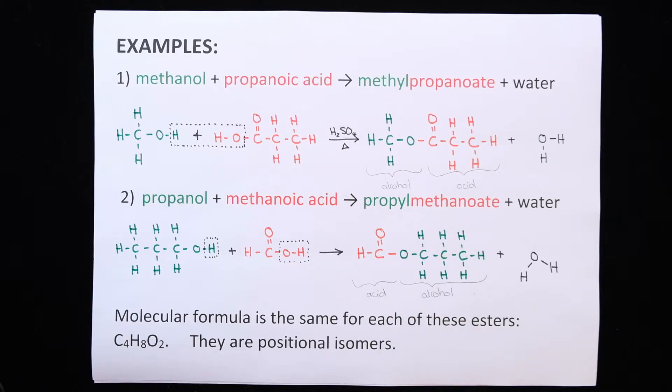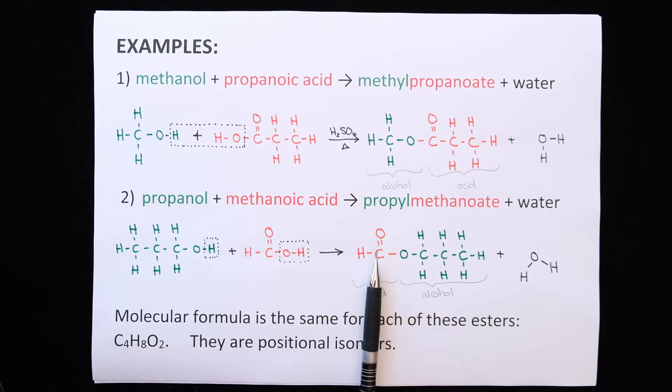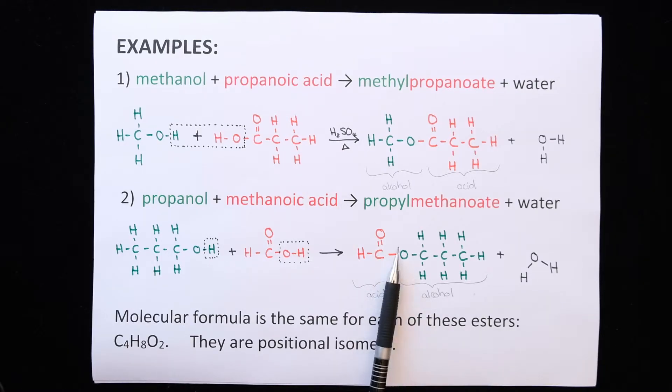The molecular formula is the same for both of these esters. They both have four carbons, eight hydrogens and two oxygens. They are positional isomers. You can see they have the same functional group. The double bond O and the O in the chain. It's just the position that is different. So they are called positional isomers.